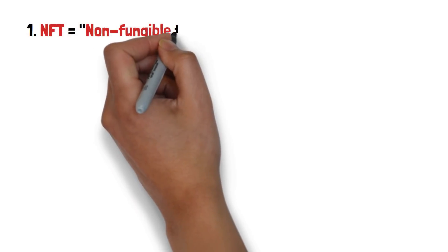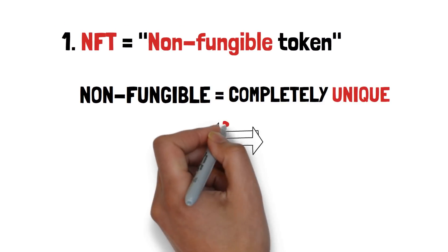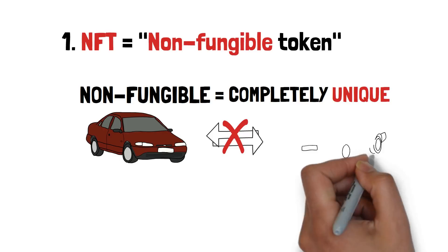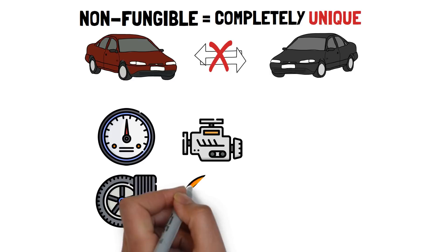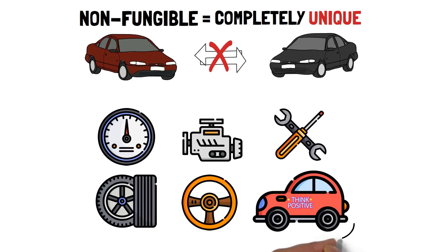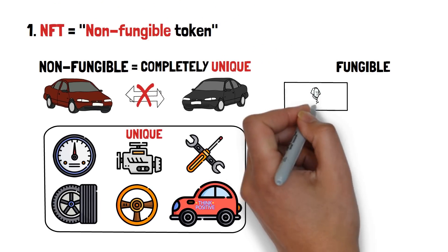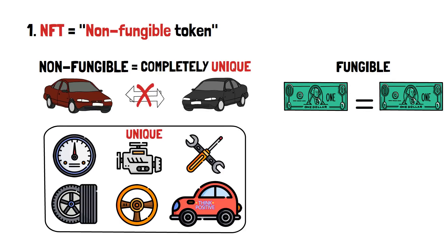An NFT is a non-fungible token. Non-fungible is a fancy way of saying that something is completely unique and cannot be replaced with something else. Think of your car — sure, there are other cars out there that are probably just like yours, but they'll have different mileage, different tires, engines, personal interior gadgets, various dings and dents, or even those stupid stickers on the trunk. All of these things make your car unique. There is only one car purely like that.